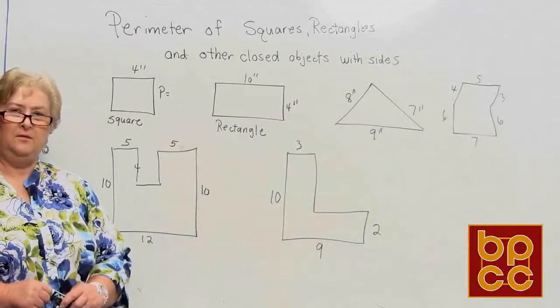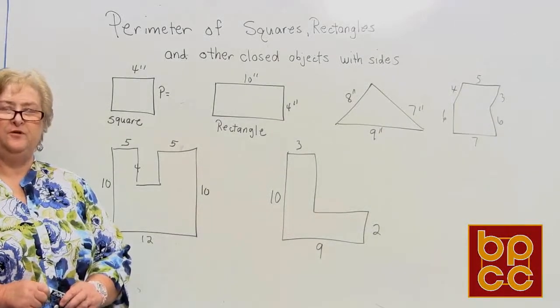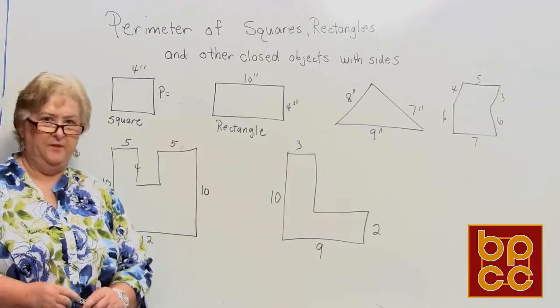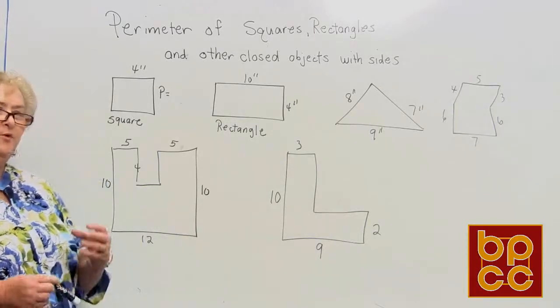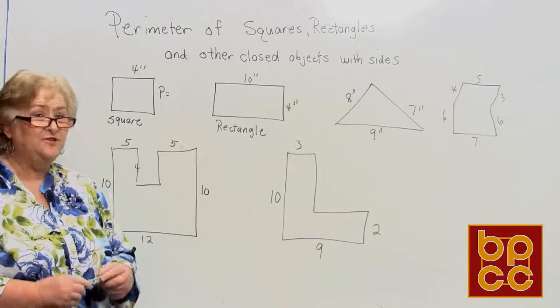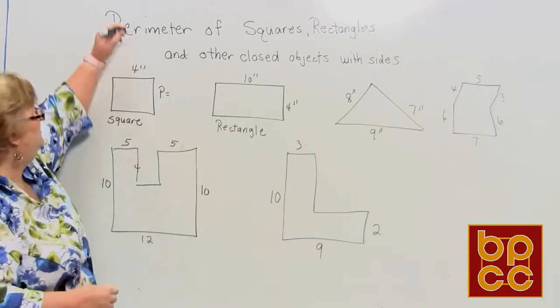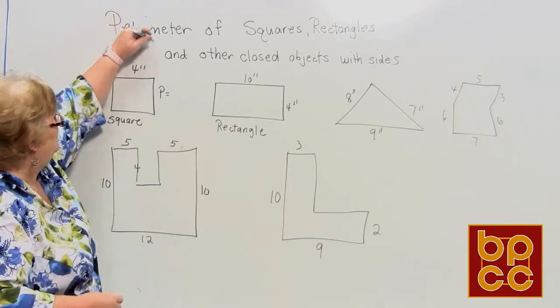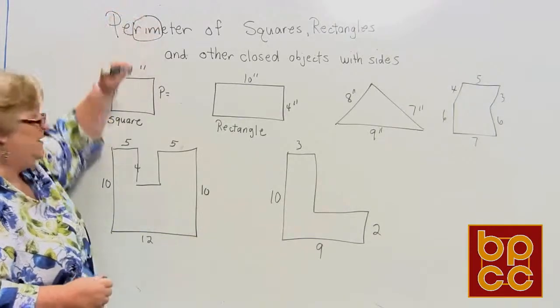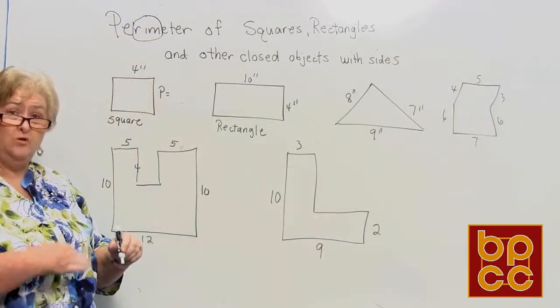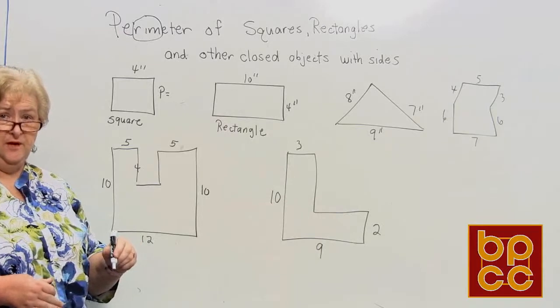Let's talk about perimeter of some different objects. Perimeter has the word 'rim' in it — and rim means the walk around an object.